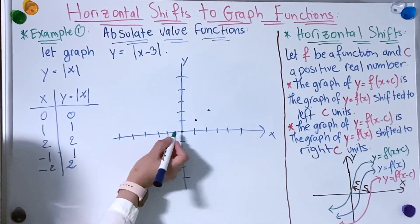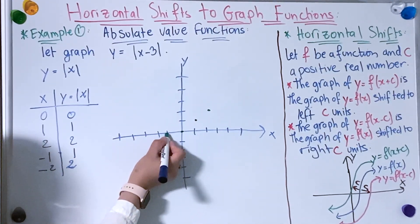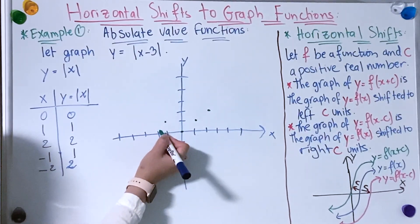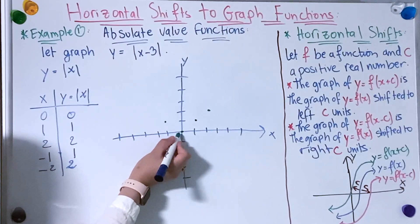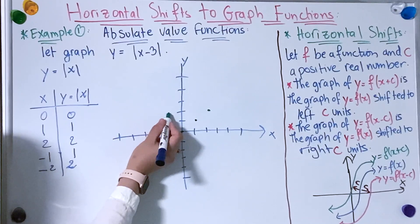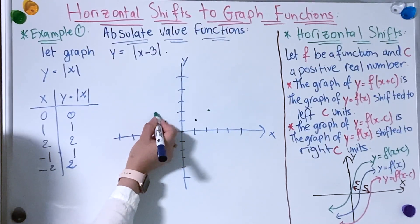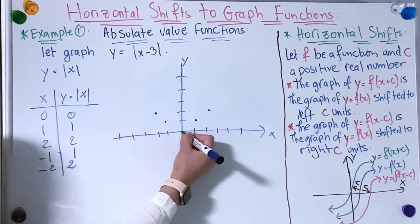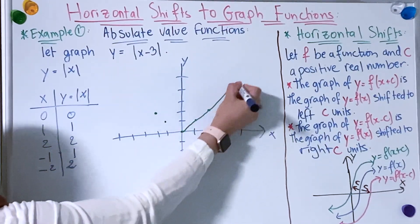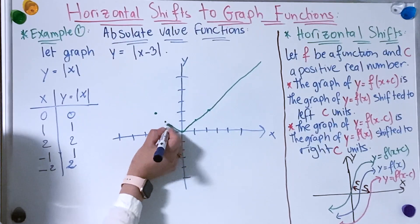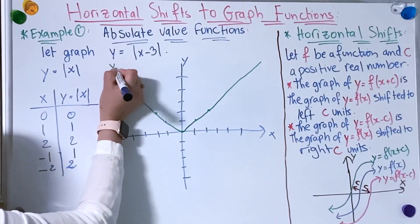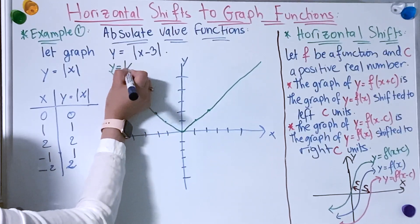And the other one: x = −1 and y = 1. Now I'm going to connect the points I found. So here I have y = |x|.